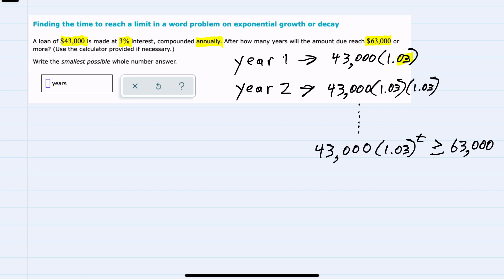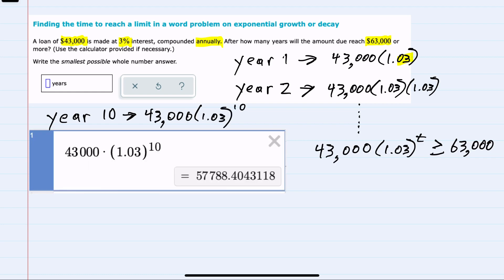And I'm going to start by looking about 10 years out. So our value after 10 years would be the $43,000 times 1.03 raised to the 10th. Plugging this into Desmos, I can see that 10 years later, the value is up to $57,788.